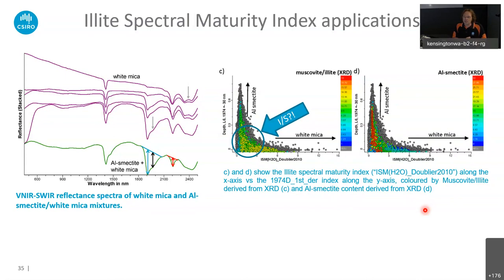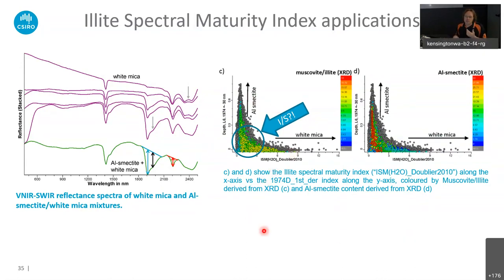We're working to better understand how we can distinguish different types of aluminum smectite, different kinds of smectites, whether we can map out illite-smectite interlayered versions, and different illite types and different kinds of white micas. We're developing different algorithms to extract this information from the reflectance spectrum, using the whole reflectance spectrum from the visible to the thermal infrared for these kinds of analyses.